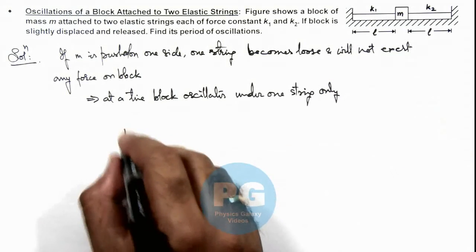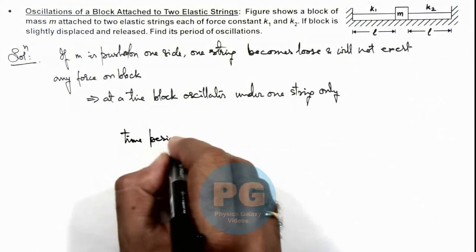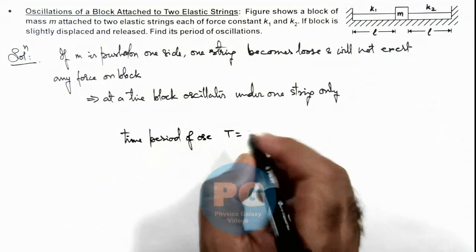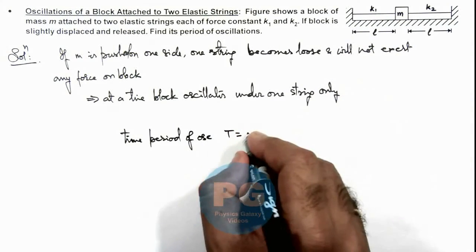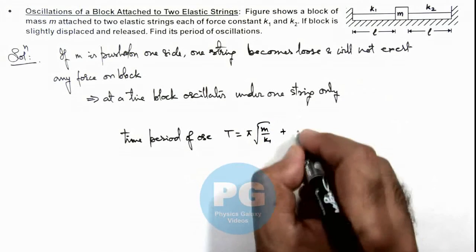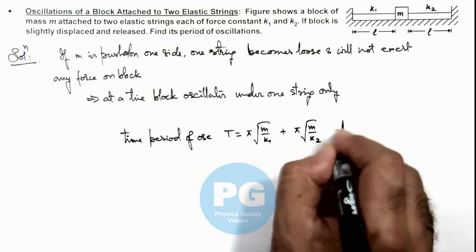So we can write the time period of oscillations can directly be given as half for k1, half for k2. So this will be π√(m/k1) + π√(m/k2). That will be the result of this problem.